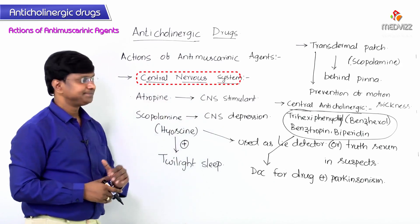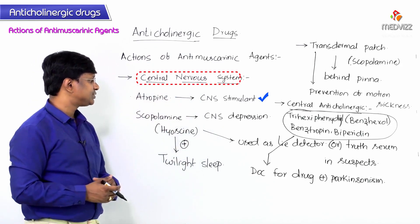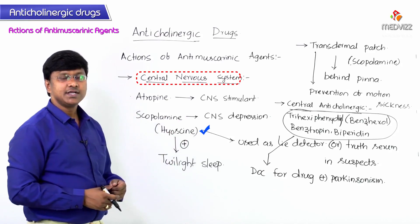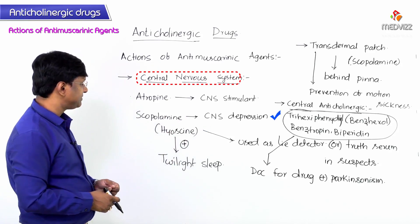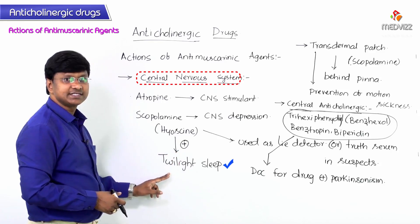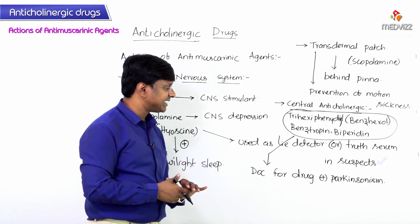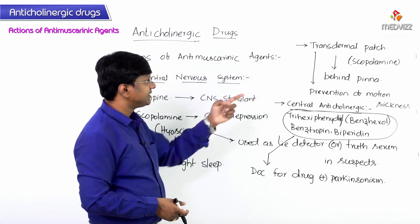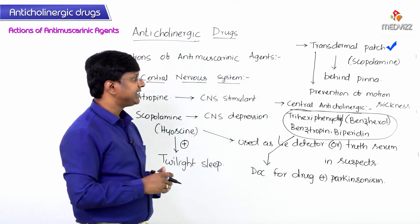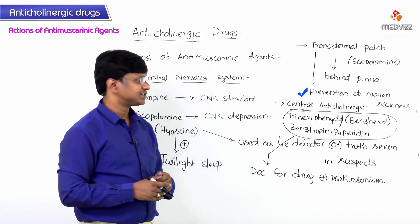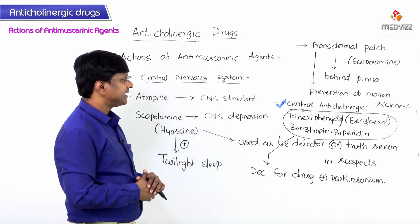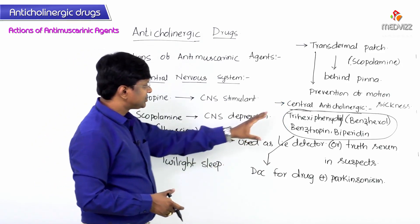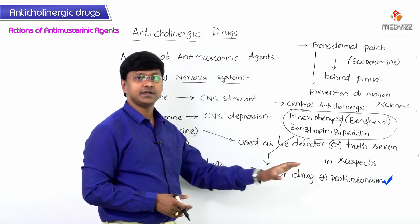To briefly revise the CNS actions: atropine is a CNS stimulant. Scopolamine (hyoscine) causes CNS depression; due to its amnesic effect and CNS depressant action, it induces twilight sleep, is used as a lie detector or truth serum in suspects, and as a transdermal patch applied behind the pinna for prevention of motion sickness. Central anticholinergic agents — trihexyphenidyl (benzhexol), biperiden, and benztropine — are the drug of choice for drug-induced parkinsonism.